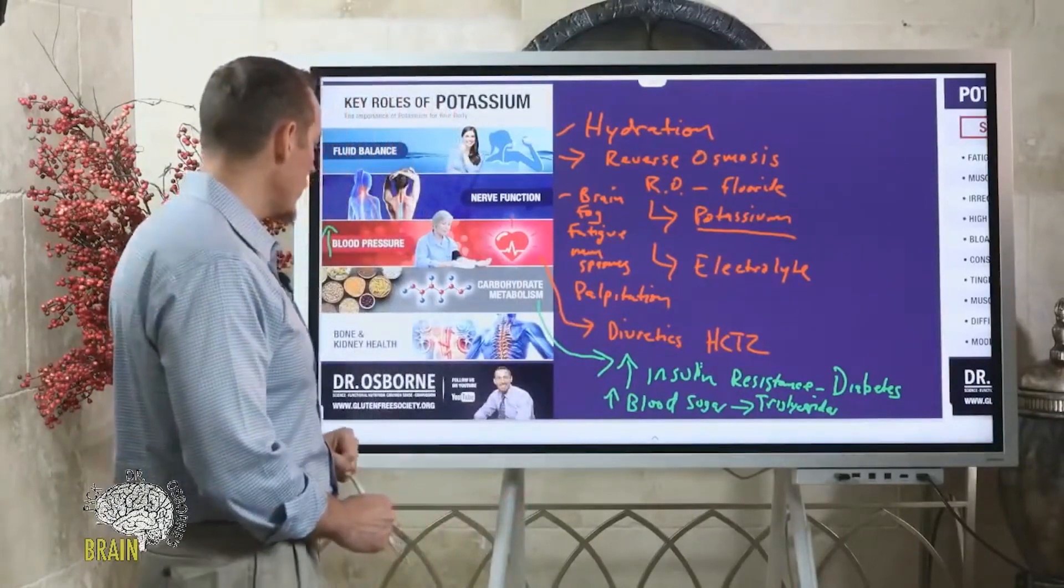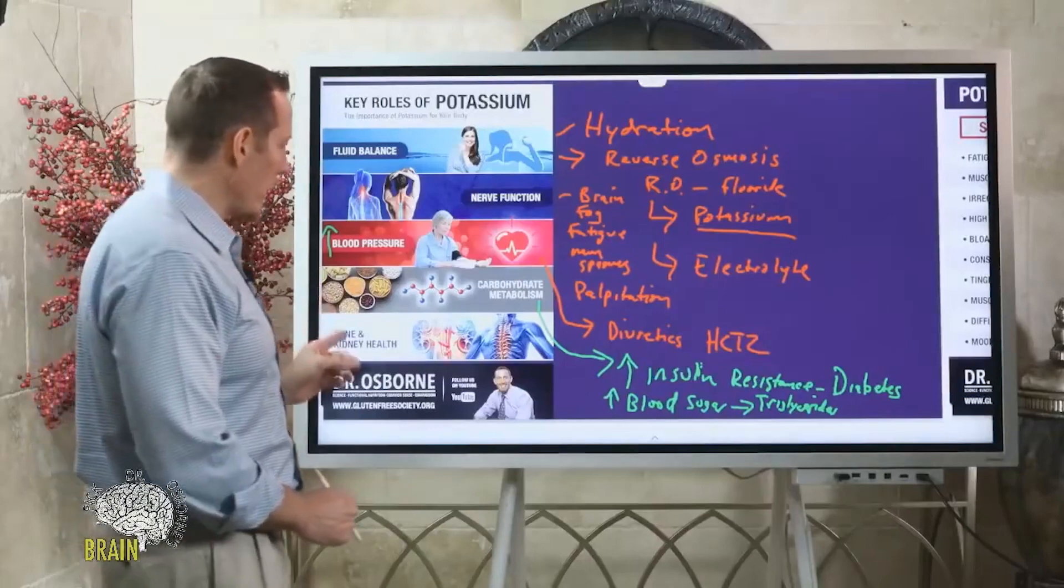What can happen to these individuals if they're not making sure that they're getting adequate potassium - it can lead to an elevation in blood sugar and actually hinder their ability to lose weight. If you've ever gone on a ketogenic diet and weren't super successful, you might really consider the fact that your potassium might have been too low when you were doing that diet.